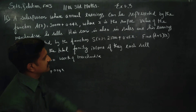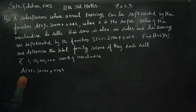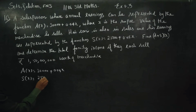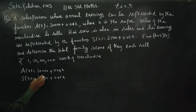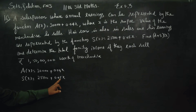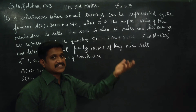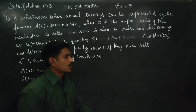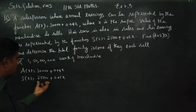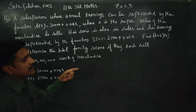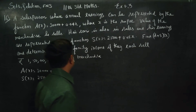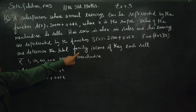The son is also in sales. S of x is equal to 25,000 plus 0.05x — that is the fixed salary plus the commission percentage on the value of merchandise sold. Find A plus S and determine the total family income.